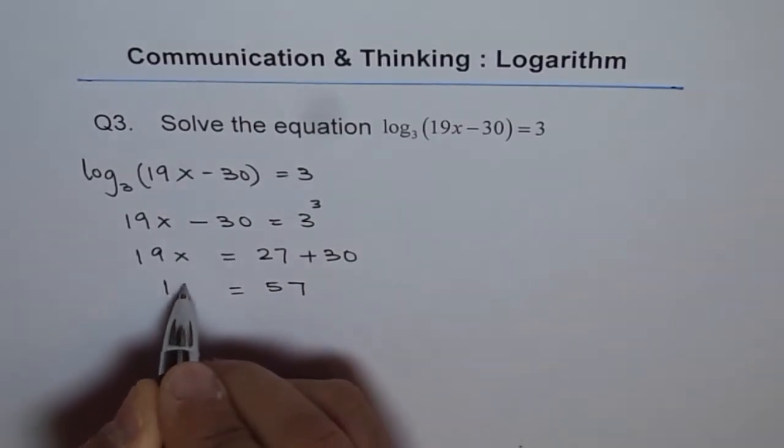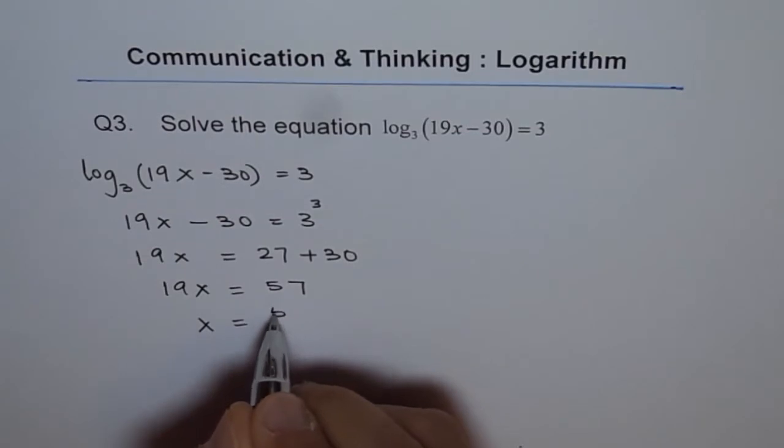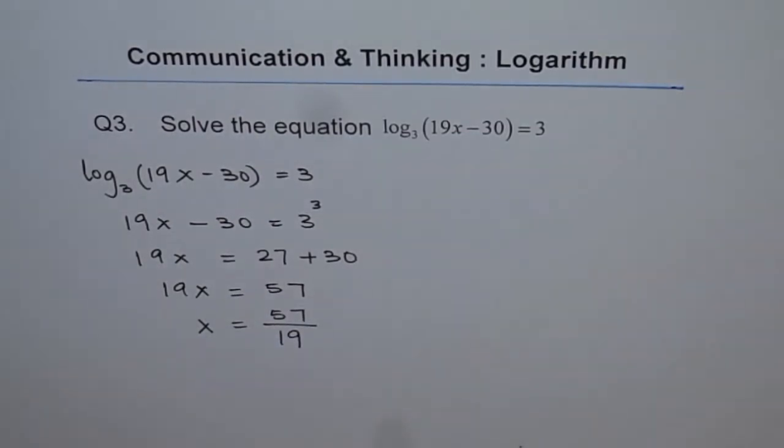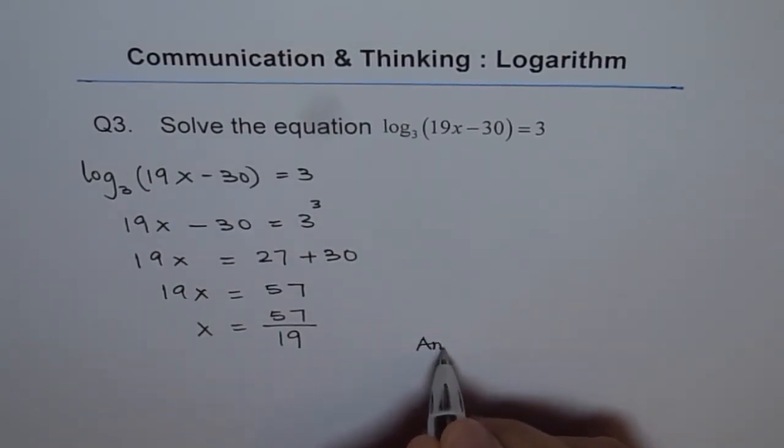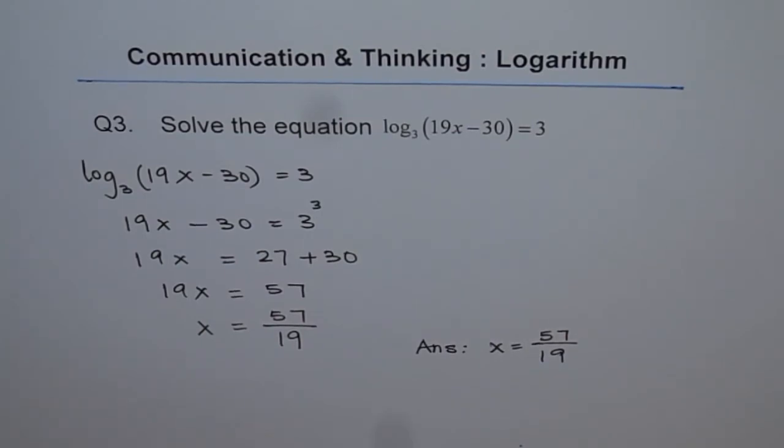So we have 19x equals 57 and therefore x equals 57 over 19. So that is the solution for the given equation, correct? So we can write the answer as x equals 57 over 19. Thank you.